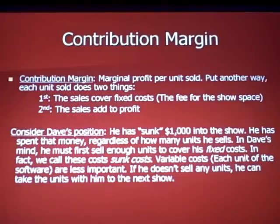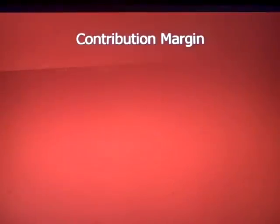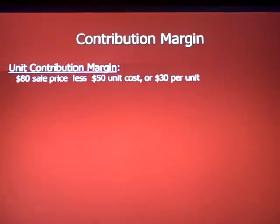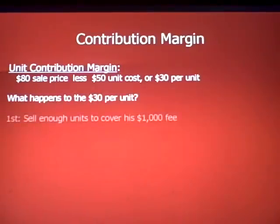The variable cost per unit of software is less critical — if Dave doesn't sell any units, he takes them to the next show. No harm, no foul; he can avoid incurring those variable costs if he sells nothing. The per-unit contribution margin in this case is the eighty-dollar sale price less the fifty-dollar unit cost, which equals thirty dollars per unit.